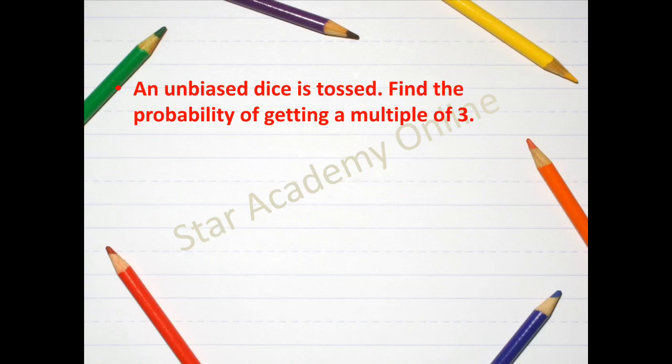Moving on to another question for your practice, an unbiased dice is tossed. Find the probability of getting a multiple of three. Now if you know a dice has six sides, right? So the sample space in this case would be six.